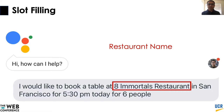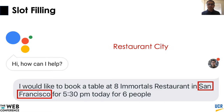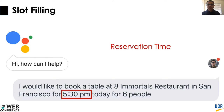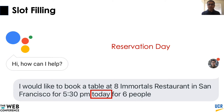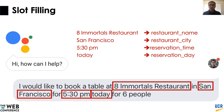8 Immortals Restaurant is the restaurant name. San Francisco is the name of the city where the restaurant is located. 5:30 pm is the reservation time the user is requesting. Today is the reservation day. And 6 is the party size. Now we are ready to define slot filling. Slot filling is extracting parameter values from a natural language utterance. This is a critical step in any goal-oriented dialogue system, because without it, the system won't be able to understand the needs of the user.